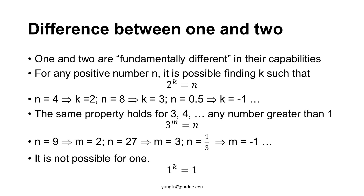For any positive number n, it is possible to find a number k such that 2 to the power k equals n. For example, if n is 4, k is 2; if n is 8, k is 3; if n is 0.5, k is minus 1. This same property also applies to 3: for any positive number n, it is possible to find a number m such that 3 to the power m equals n. For example, if n is 9, m is 2; if n is 27, m is 3; if n is one-third, m is minus 1.